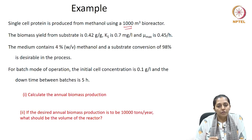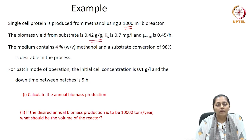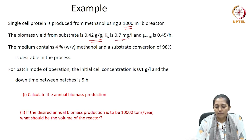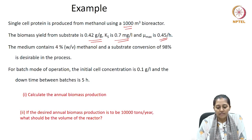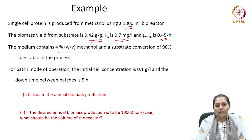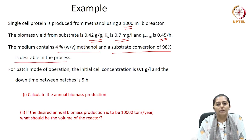The biomass yield of the single cell protein from the substrate is given as 0.42 grams per gram. The Monod saturation constant Ks is given as 0.7 milligrams per liter, and the maximum specific growth rate µmax is given as 0.45 hour inverse. The medium contains 4 percent methanol, which as weight by volume corresponds to 40 grams per liter of methanol.